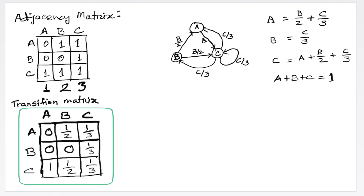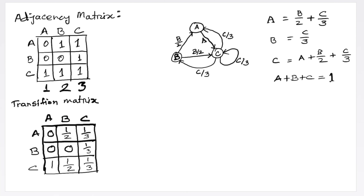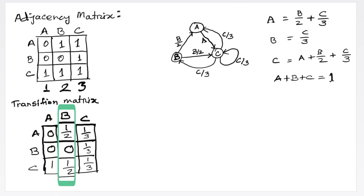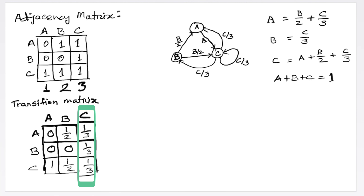This is the second part of the PageRank algorithm topic. At the end of the first part, we discussed how the transition matrix is constructed from the adjacency matrix of the internet network.